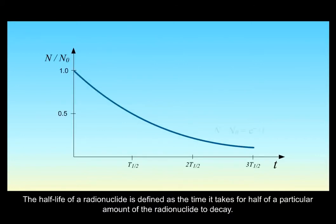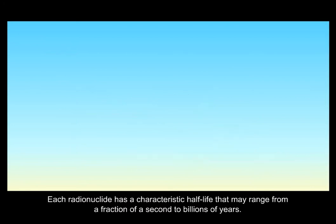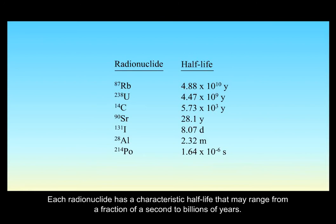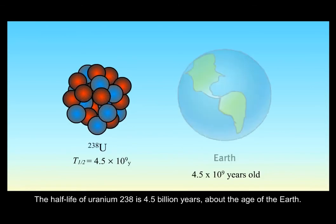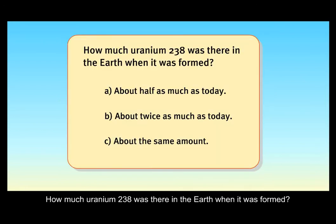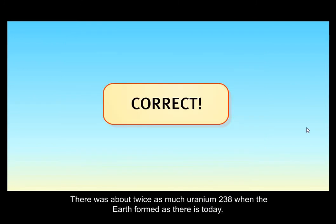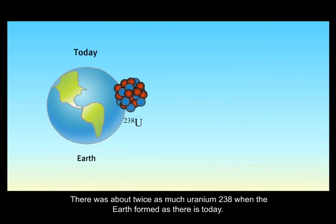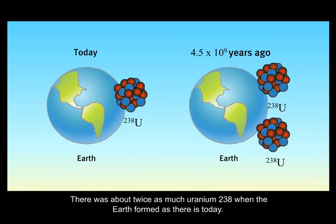The half-life of a radionuclide is defined as the time it takes for half of the particle amount of the radionuclide to decay. Each radionuclide has a characteristic half-life that may range from a fraction of a second to billions of years. The half-life of Uranium-238 is 4.5 billion years, about the age of the Earth. How much Uranium-238 was there in the Earth when it was formed? Correct. There was about twice as much Uranium-238 when the Earth was formed as there is today.